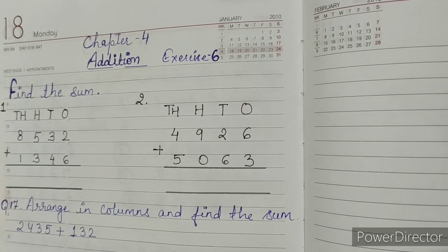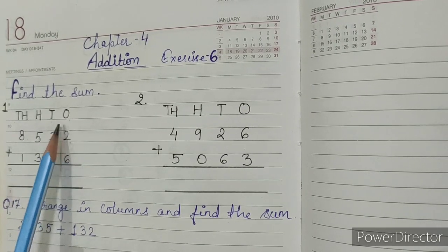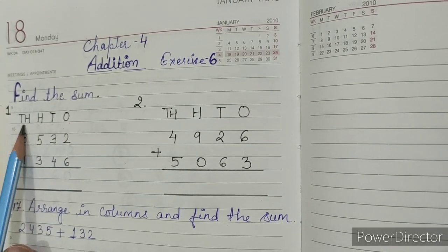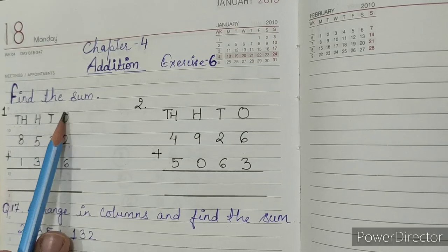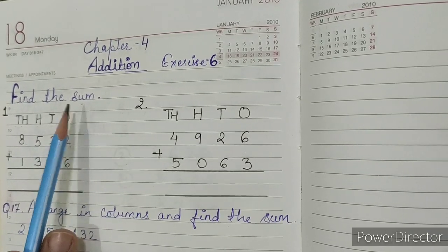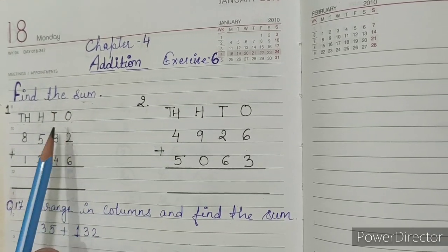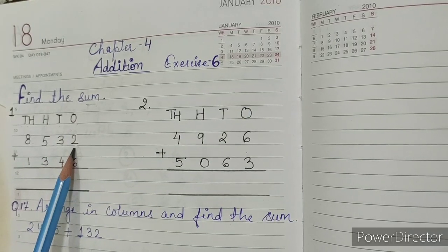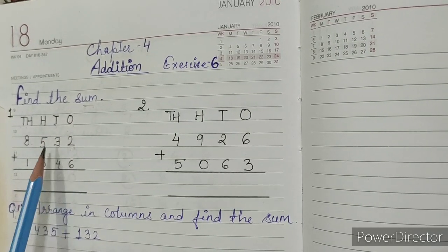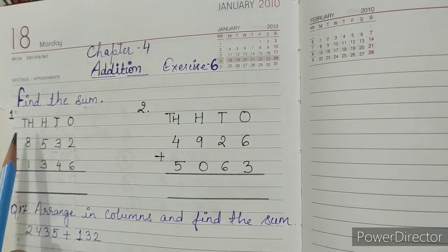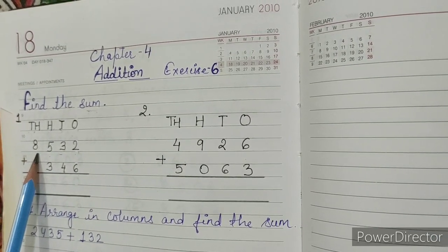Find the sum. Question number 1. We have ones, tens, hundreds, thousands. In this question we have to find the sum - sum means addition. On the ones place we have 2, tens place 3, hundreds place 5, and thousands place 8.